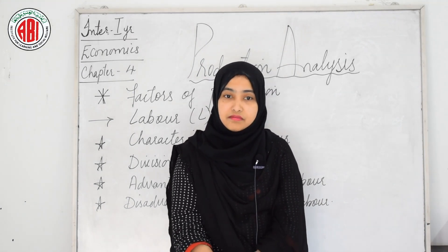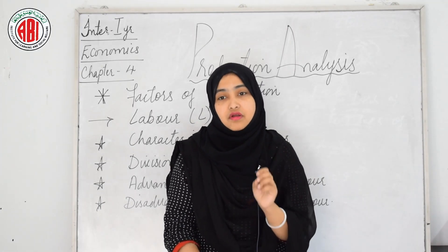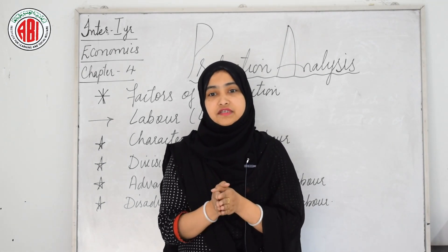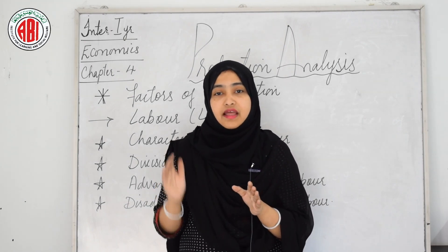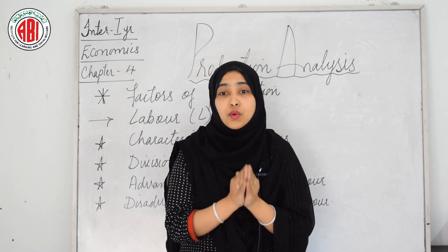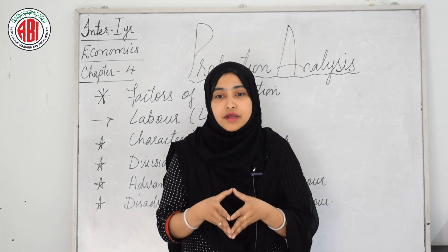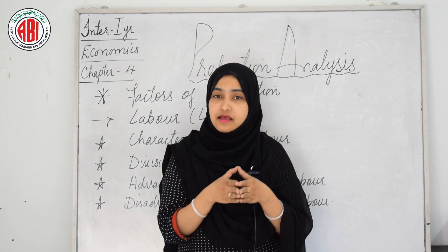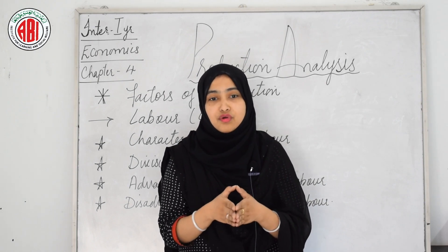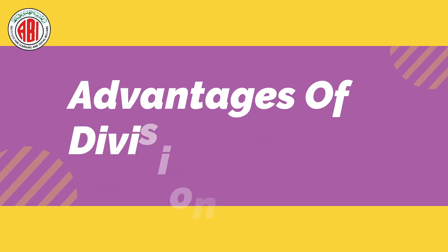Now we will see the division of labor. It is an important feature of modern industrial organization, referring to the scheme of dividing a given activity among workers such that each worker is supposed to do one activity. Division of labor increases the output per worker on account of higher efficiencies and specialized skills. Adam Smith identified and explained the division of labor in his work.